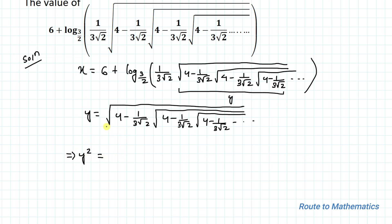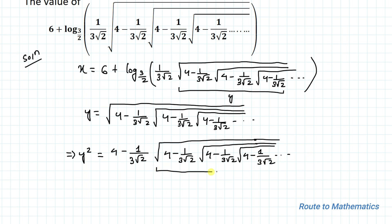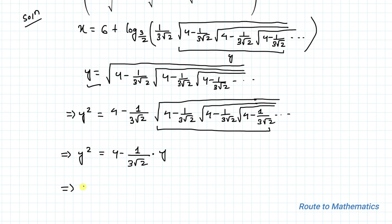Squaring both sides, y² equals 4 minus (1 divided by 3√2) multiplied by the remaining nested radical, which is itself a repeating expression. Since this repeating expression is nothing but y, we substitute y here. So y² equals 4 minus (1 divided by 3√2) multiplied by y. Taking LCM, we get 3√2 · y² equals 12√2 minus y.